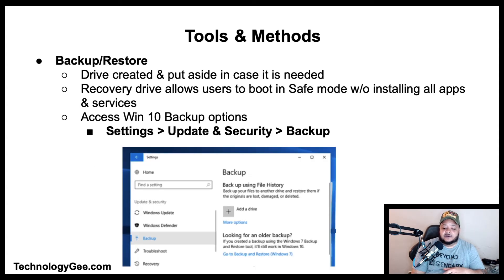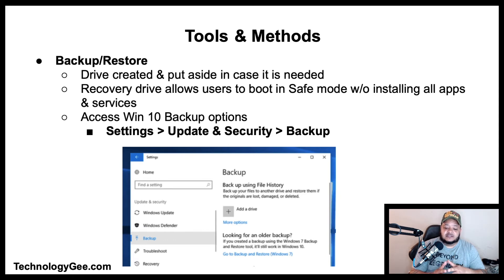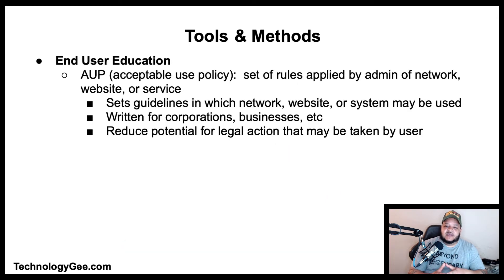Infected computers can also be troubleshot from a recovery drive — a drive that is created and set aside in case it is needed. The recovery drive allows users to boot into safe mode without installing all applications and services. Once there, a user can remove infected files and reboot the computer to normal condition. To access Windows 10 backup options, go to Settings > Update and Security > Backup.